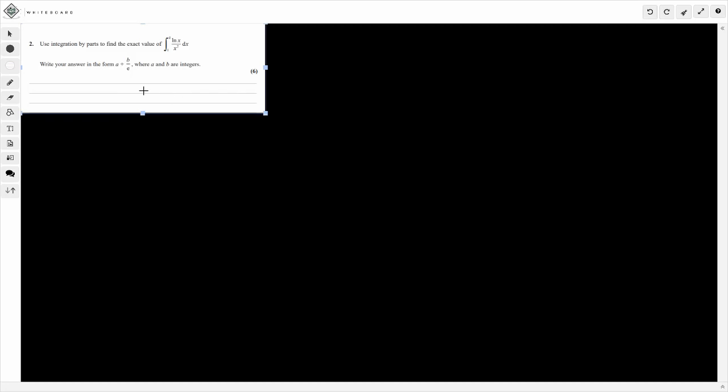Hey guys, and welcome back to another A-level maths tricky exam question. In this question here today, we've got an integration by parts. So we're asked to find the exact value of ln x divided by x squared, with the limits from e to 1.